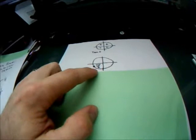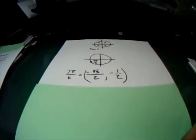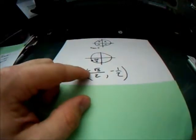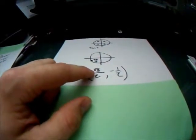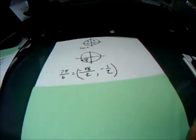That value is going to be 7π/6. Now, 7π/6 is equal to (-√3/2, -1/2).